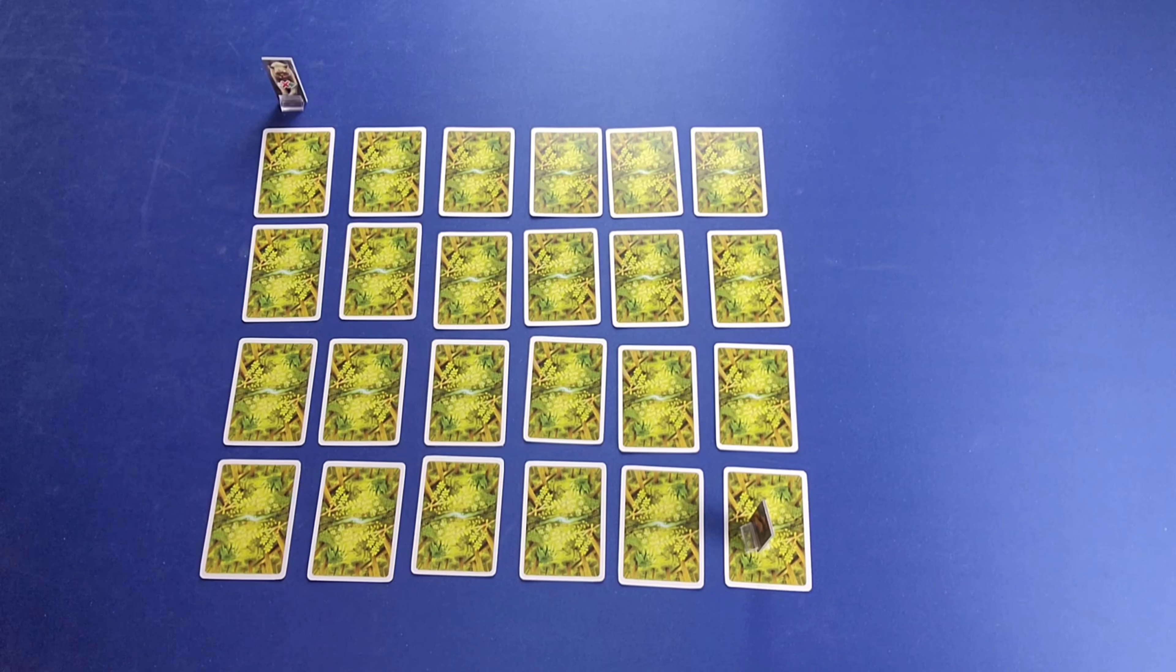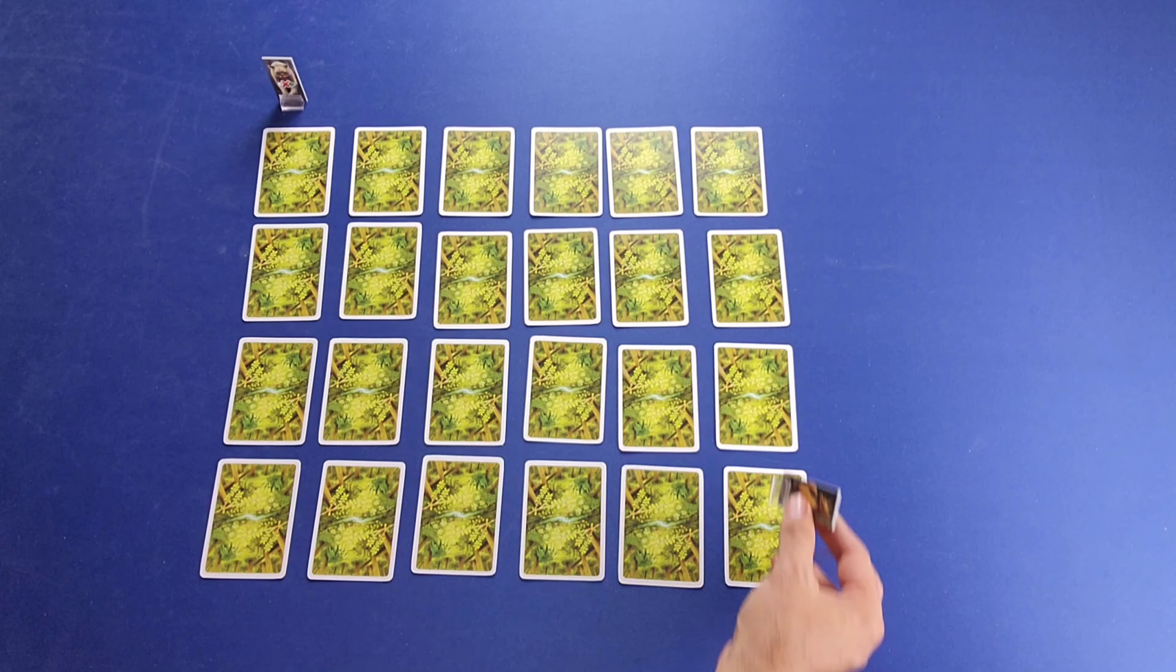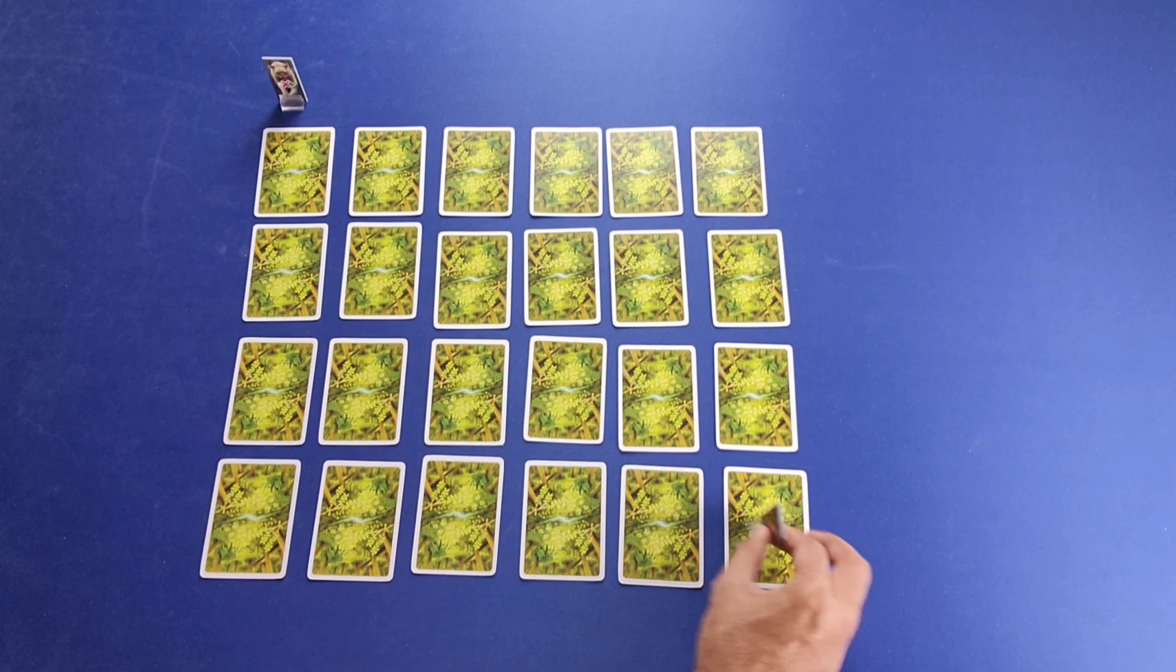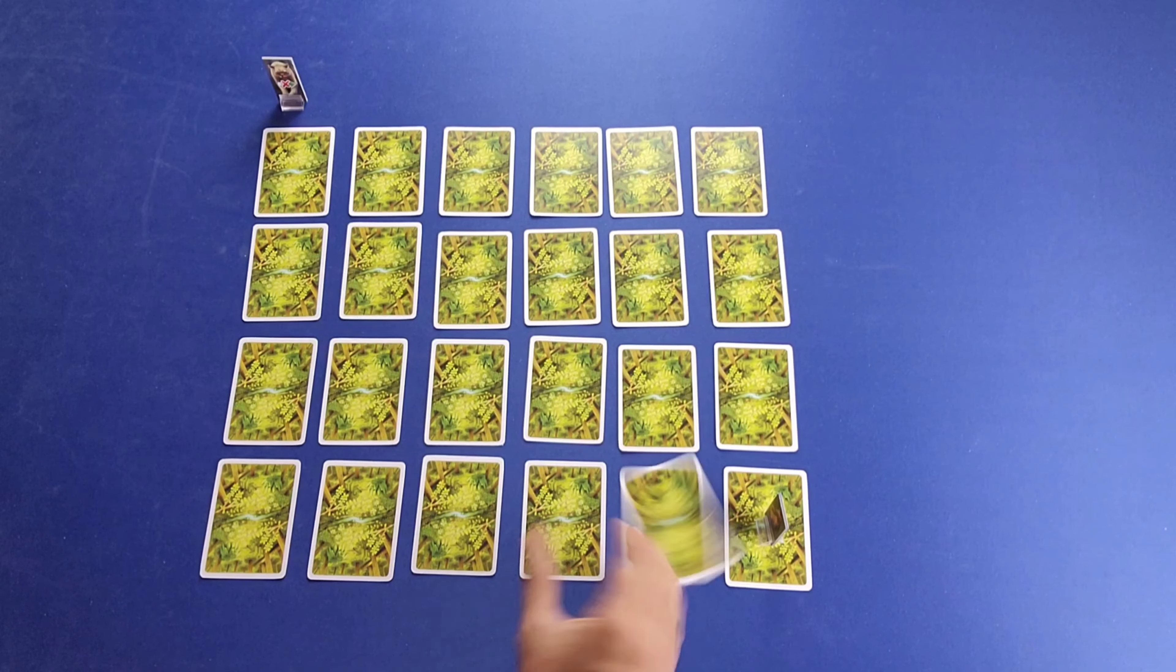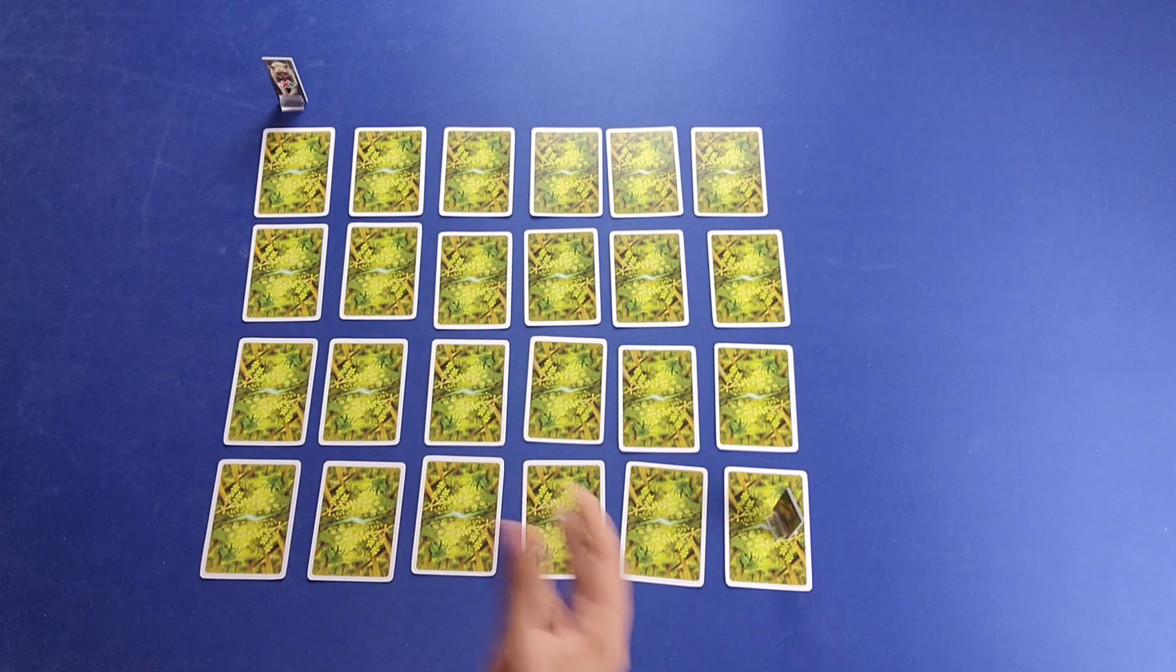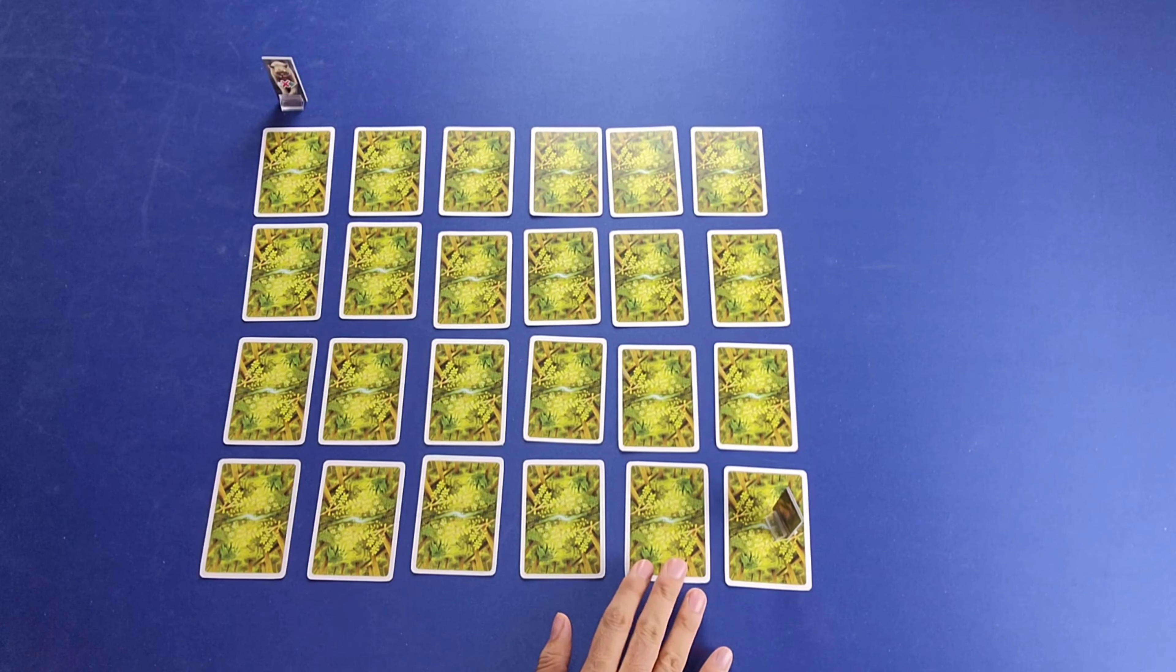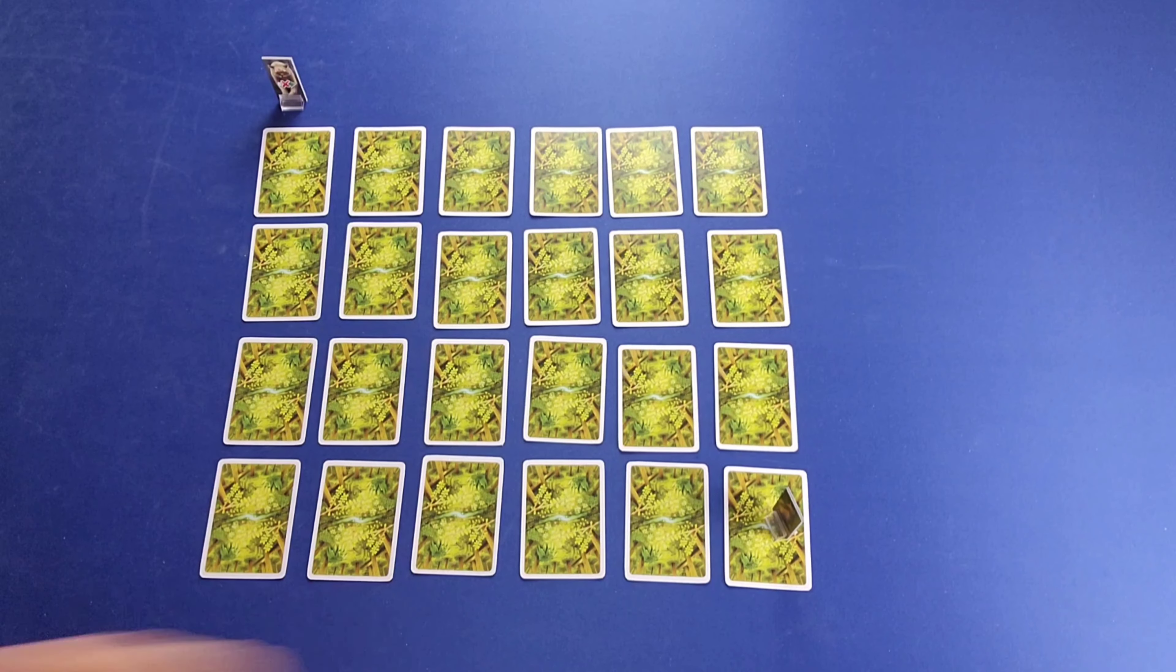Your two options are you can move the Standee one space to a card that's adjacent, orthogonally adjacent. But if you move it only one space, then you're not going to be able to reveal the card. You're not going to be able to turn it over, and that's pretty much the name of the game. This is basically like the classic game of memory. You're trying to flip over cards and try to discover, in particular, your objective, which are those three rabbit cards. Now, if you move two spaces, you will be able to flip over the card that you finished your movement on.